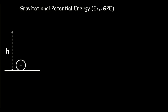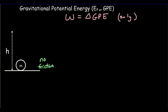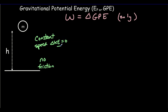Let's derive a formula for gravitational potential energy. We say work equals change in energy, but we do it in a way that only changes gravitational potential energy. That implies two things: no friction, so no heat energy is produced, and we must lift the object at constant speed so that the change in kinetic energy is zero. At constant speed, the upward force F and the weight must be exactly the same size, so F equals Mg.